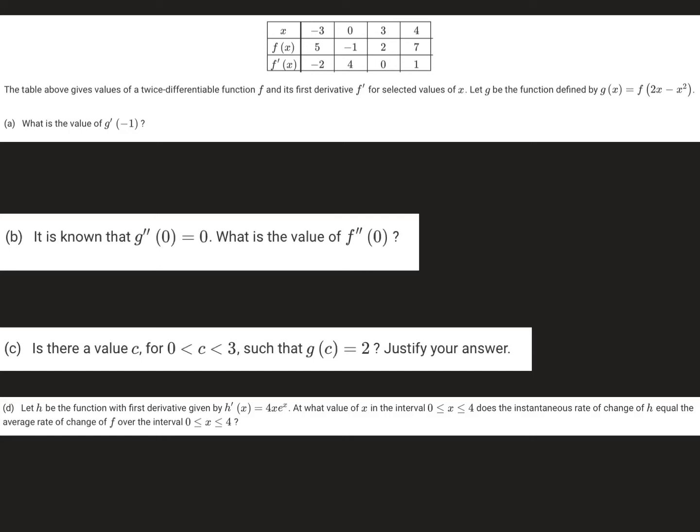All right, so let's talk about the FRQ from unit 3. They give you a table of values. Notice that it's a table for f, a function f, and its derivative. And then immediately they ask you questions about g, which is defined as a composition of f with 2x minus x squared.